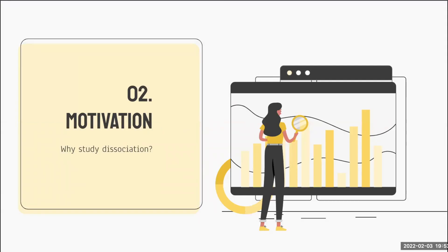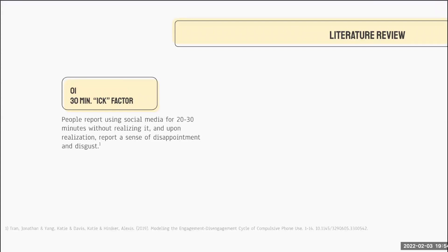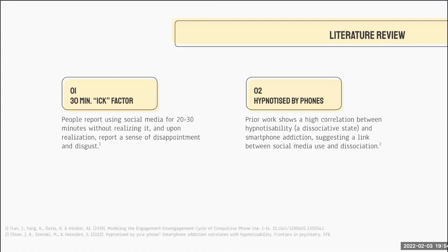With that in mind, why should we study dissociation on social media specifically? There's a lot of prior work that hints to this connection between dissociation and social media use, although it doesn't necessarily use the term. I'll talk about two papers in particular. The first describes the 30-minute ick factor: when people realize they have used social media for 20 to 30 minutes when they only meant to check in briefly, and then have a sense of disgust afterwards. A recent study also showed a high correlation between hypnotizability and smartphone addiction — and being hypnotized is generally agreed to be a dissociative state — suggesting a link between social media use and overuse and dissociation.